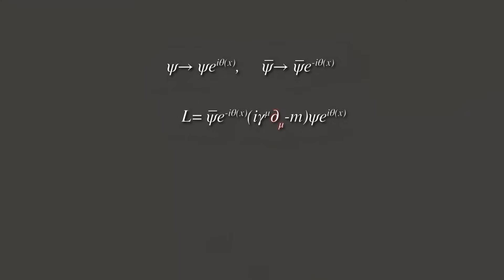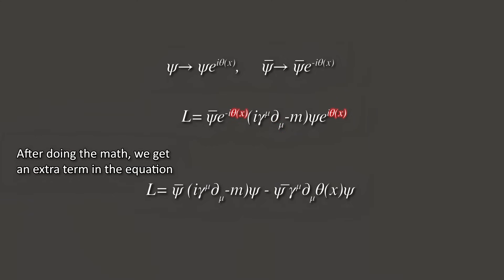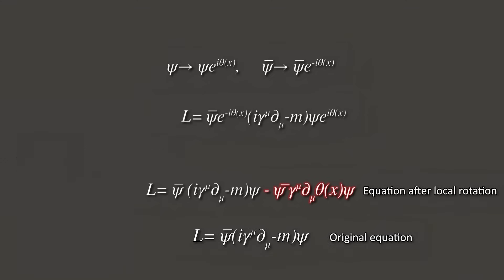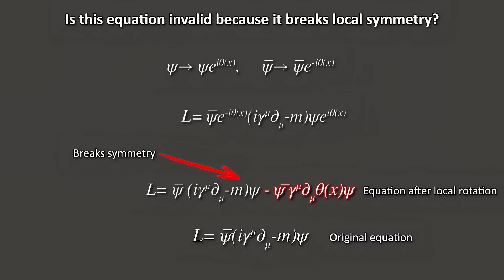We now insert this transformation once again into the Dirac Lagrangian. But now because when the del mu term acts on the theta x term, after doing the math, we get an extra term in the final equation. So this equation has changed from the original. This means that the local rotation we demanded breaks the symmetry. So what now? Is our theory dead? Is the game over? No.